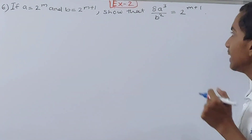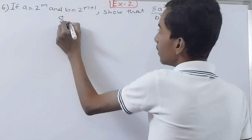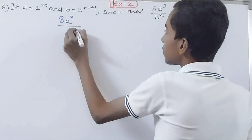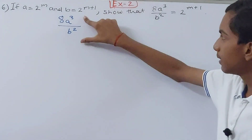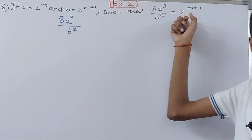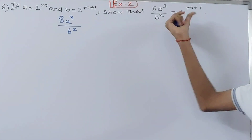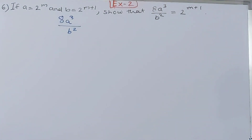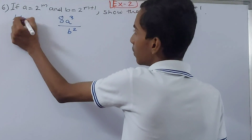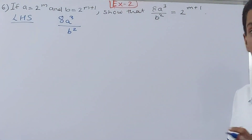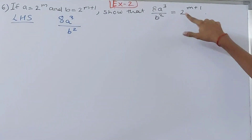We have the expression 8a³ upon b², and we will solve this to get 2 to the power m plus 1. Let's leave the right-hand side completely aside for now — we are solving the left-hand side. The right-hand side, 2 to the power m plus 1, is already a value in itself, so there is nothing to solve there.